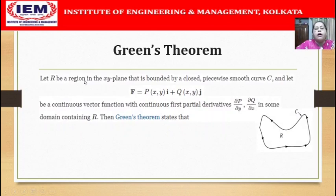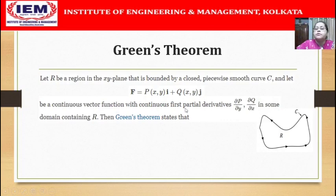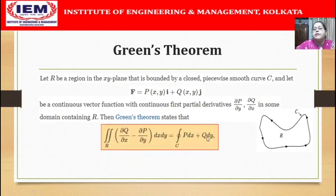Suppose that we have a region R in the xy-plane bounded by a closed piecewise smooth curve C, and let F equal to P(x,y) i plus Q(x,y) j be a continuous vector function with continuous first partial derivatives ∂P/∂y and ∂Q/∂x in some domain containing the region R. Then Green's theorem states that the line integral of P dx plus Q dy along the curve C is equal to the double integral of (∂Q/∂x minus ∂P/∂y) dx dy over the region R.